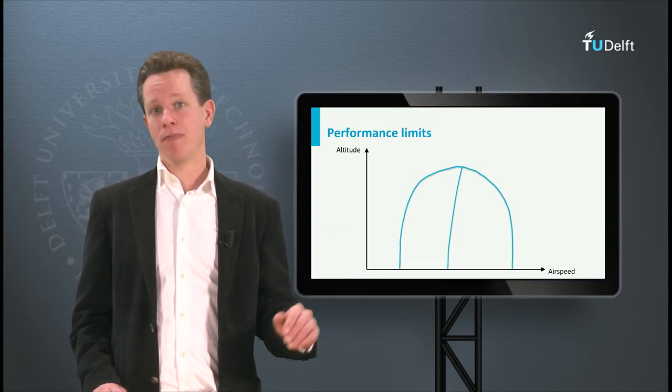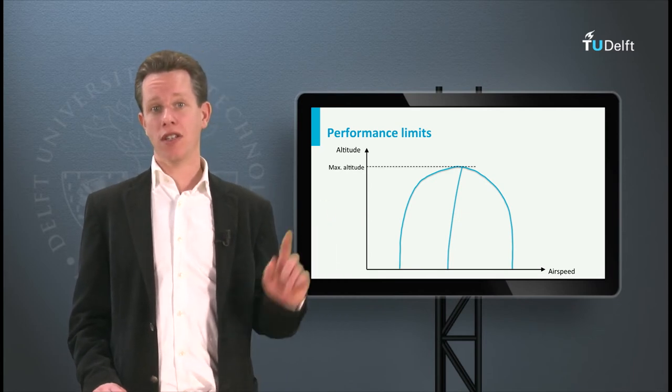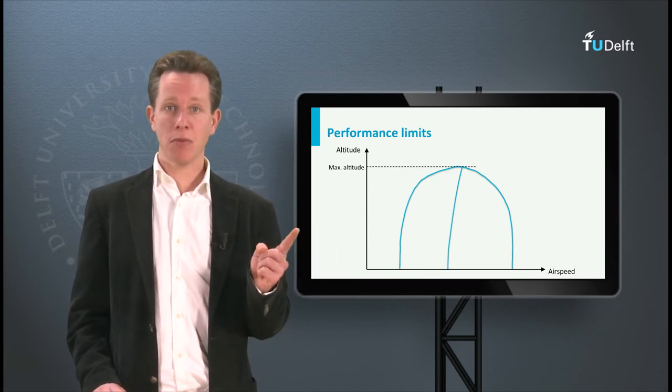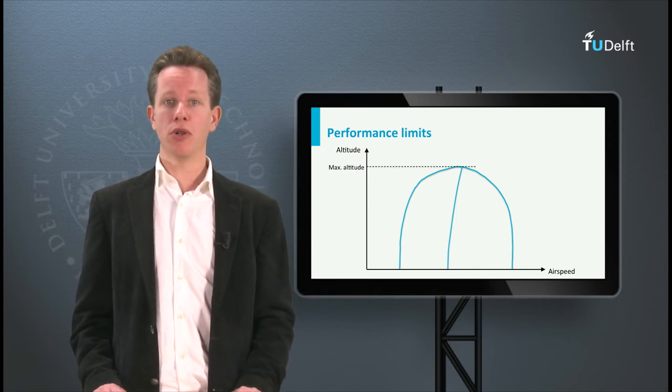One interesting point in this diagram is the maximum altitude. In this situation the aircraft limits, maximum airspeed and minimum airspeed, have converged into a single point.